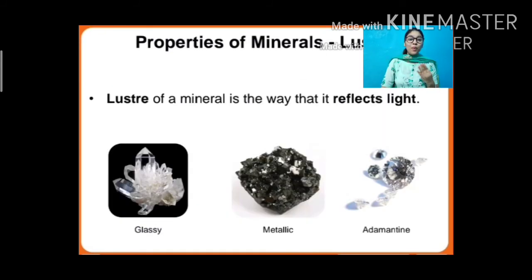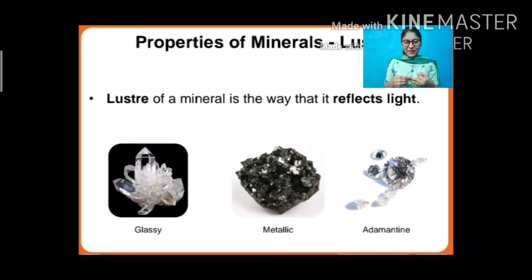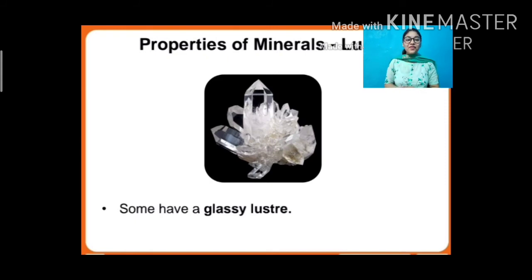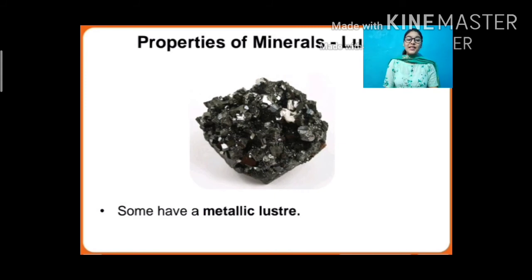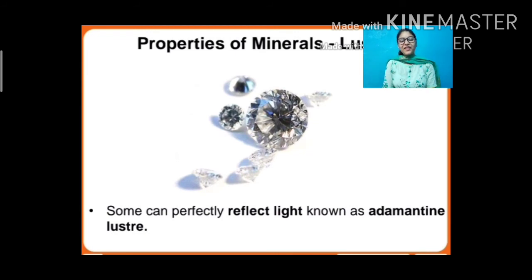The fourth property is lustre. Lustre of a mineral is the way that it reflects light. It can be glassy, metallic, or adamantine. Some minerals have a glassy lustre, whereas some minerals have a metallic lustre. Some minerals can perfectly reflect light and are known as having an adamantine lustre. So we have glassy, metallic, and adamantine.